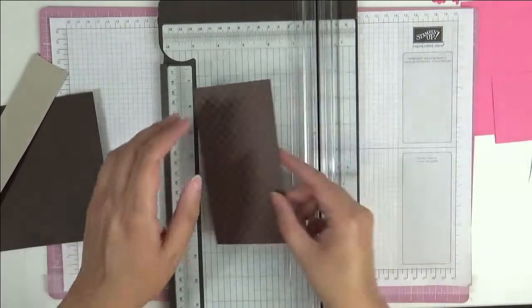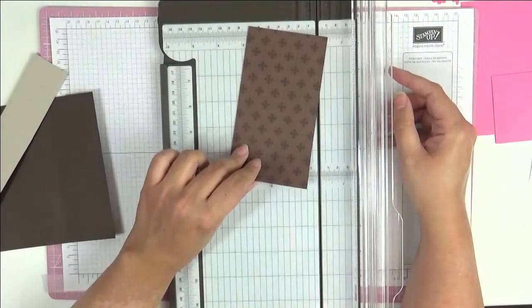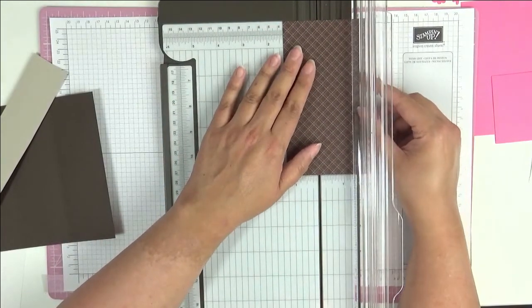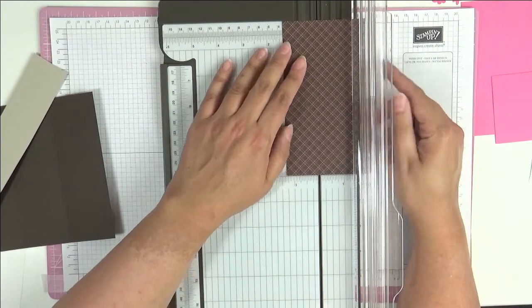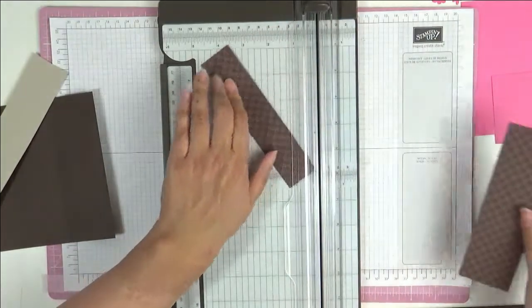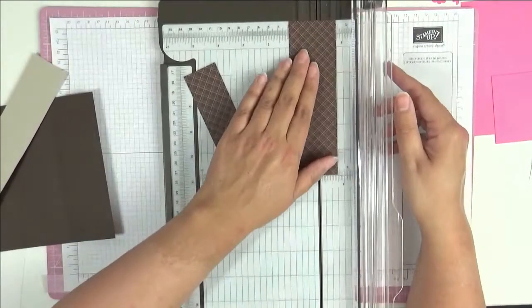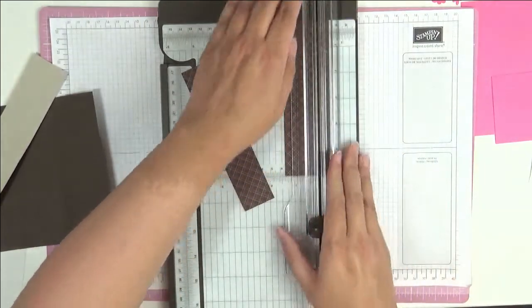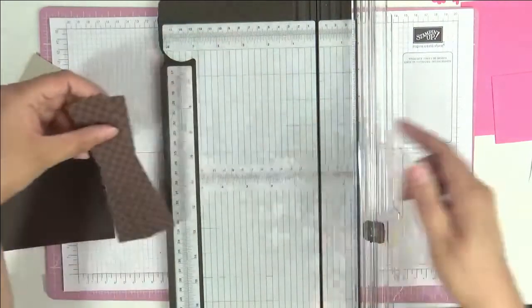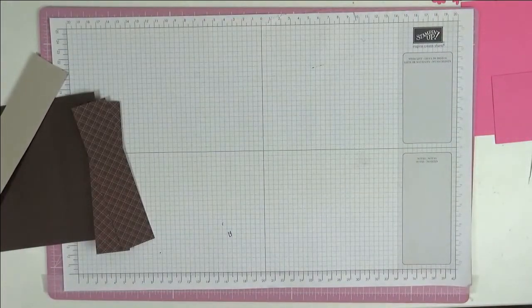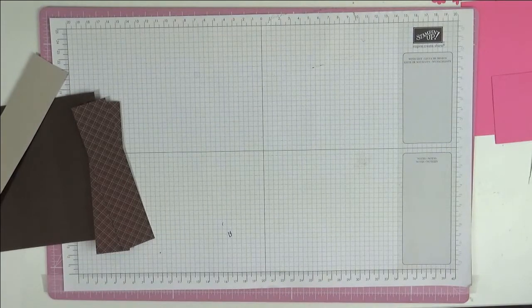We're going to do a little bit of cutting. We're going to cut this piece down. Now this is some of the Early Espresso designer series paper, and we're going to cut this down to three and a half centimeters like that, and then cut a second piece because I'm going to need two, and this is just a six by six piece of designer series paper that I'm cutting down. Okay, we'll get rid of the trimmer. Put it somewhere where it doesn't collapse on the floor.